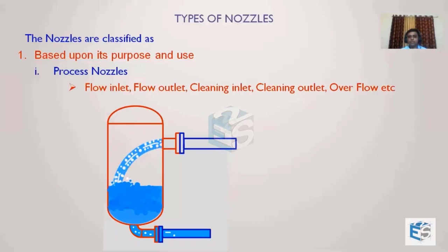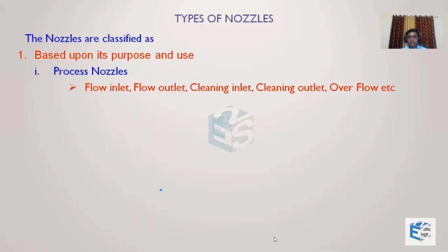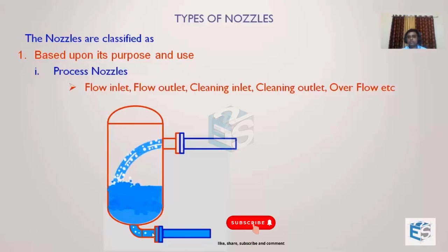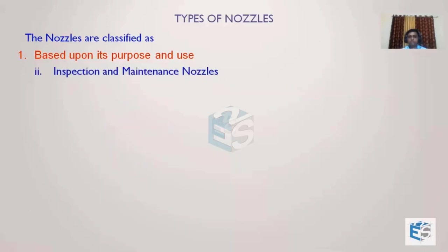This is one example of a process nozzle from which fluid is coming in, and you can observe from the bottom that it is carrying the fluid away from this vessel to some other equipment. So process nozzles serve the purpose of allowing fluid into the vessel and at the same time allowing fluid out of the vessel. The primary function is to carry or transport the fluid from or to the vessel.